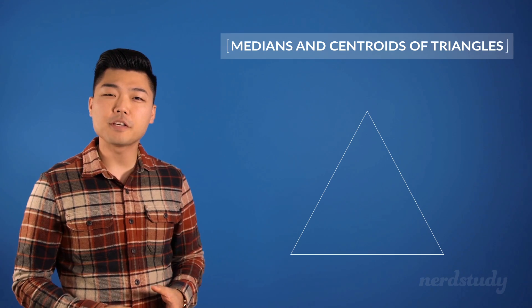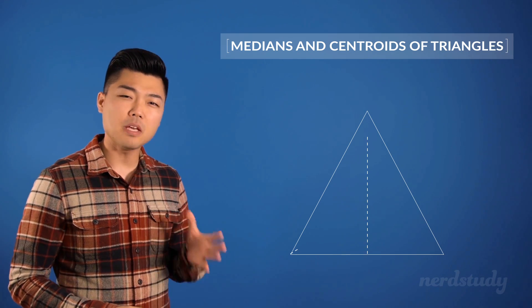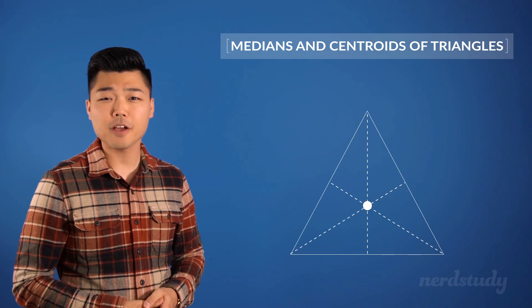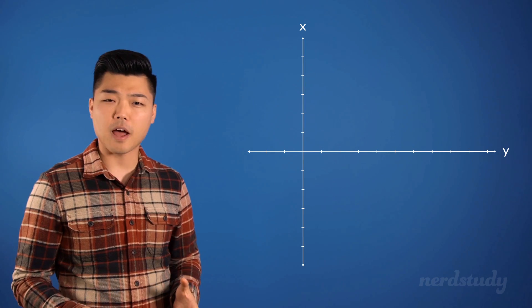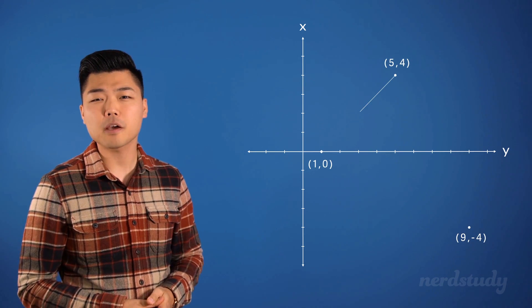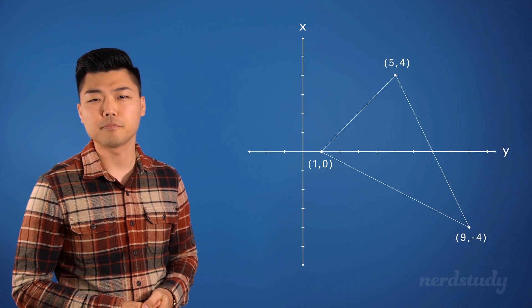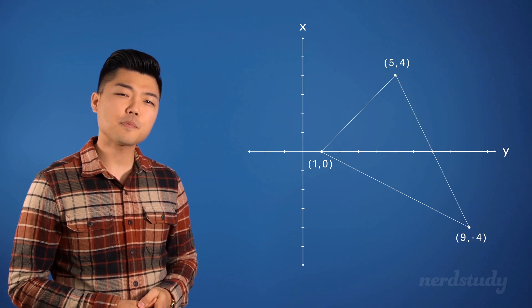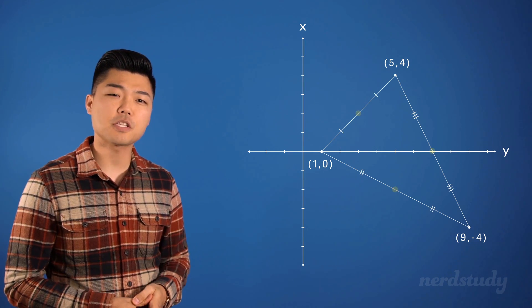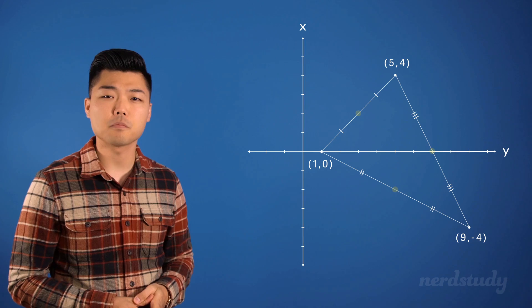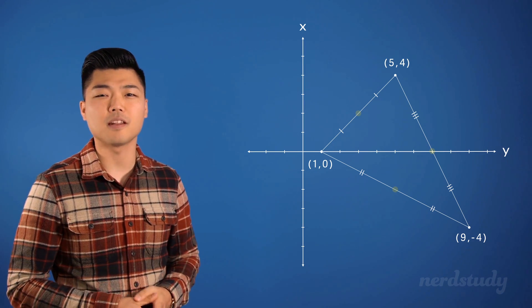Now that we have a rough idea about what the medians and the centroid of a triangle are all about, let's move on to trying some problem solving questions together. Here's a graph with three coordinates that make up a triangle. Let's begin by trying to find the exact midpoints of each side of the triangle so that we can draw our median lines.